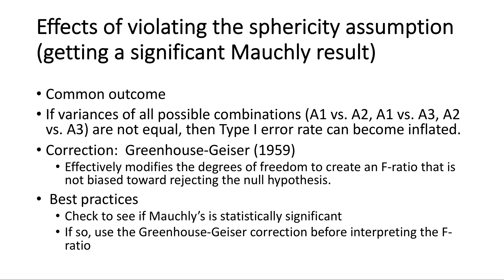The proper thing to do when going through the within-subjects analysis is to check first whether Mauchly's is statistically significant. If it is, then use the row in the ANOVA table that says Greenhouse-Geisser. The first row will show sphericity assumed; the very next row shows the Greenhouse-Geisser correction — that's the row you want for the F-ratio, and that's also the data you'll report in your write-up. The sphericity assumption is routinely violated in within-subjects ANOVA. The correction returns the Type I error rate back to an acceptable level, so look for that Greenhouse-Geisser row and the F-ratio associated with it.